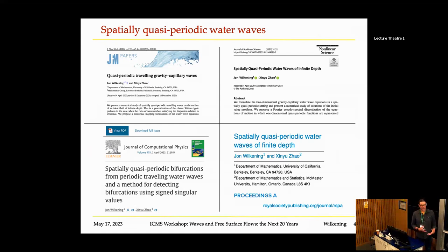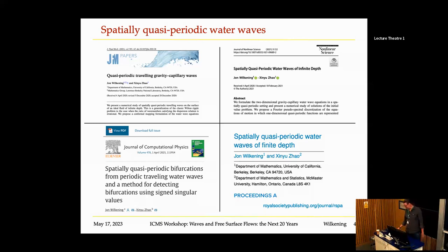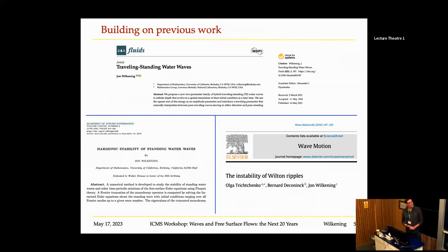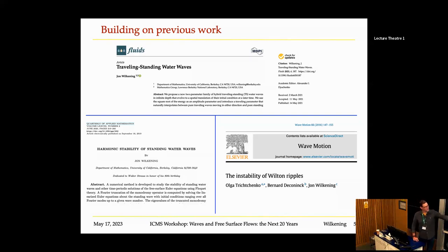Two papers focus on traveling waves and bifurcations within traveling wave families — we found traveling waves with multiple periods that still travel at a constant speed in finite and infinite depth. We also looked at the initial value problem, most relevant to rogue waves. I will build on previous work computing traveling standing waves, published around 2021, and look at stability with respect to subharmonic and superharmonic perturbations, seeking a unified method.